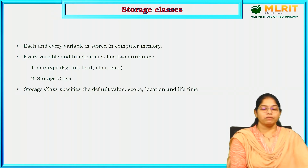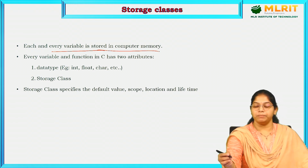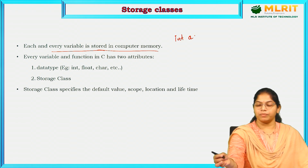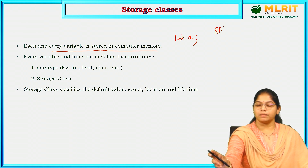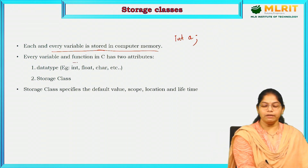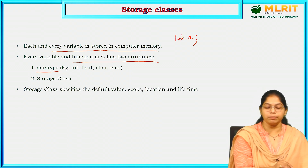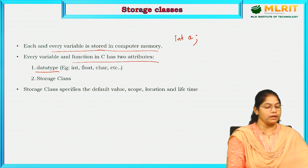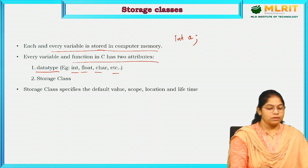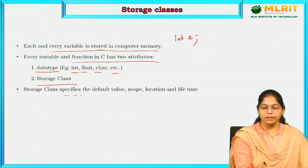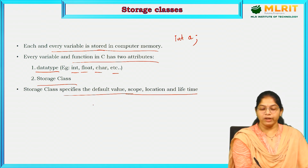What is a storage class? Every variable is stored in a computer memory. For example, if I declare a variable int a, it will be stored in computer memory. Every variable and function has two attributes: one is the data type — which type of value we are giving to a variable, like int, float, char, double — and the other is storage class. Storage class specifies default value, scope, location, and lifetime of a variable or a function.